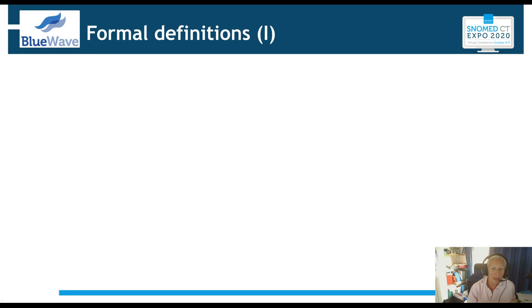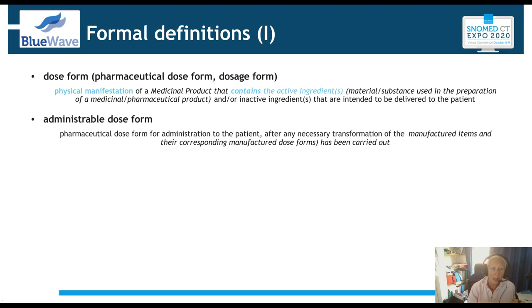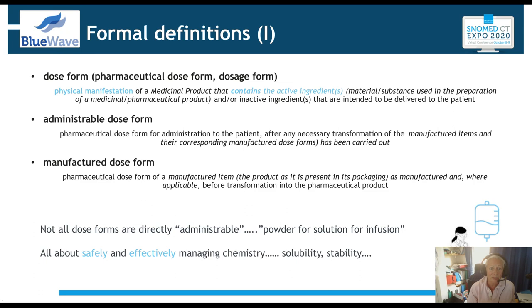We have various formal definitions of dose forms. Three matter to us particularly in clinical care. The pharmaceutical dose form is the physical manifestation of the medicinal product that contains the active substances — this is what we're most concerned about in SNOMED CT. But there are two subtypes: the administrable dose form and the manufactured dose form. Not all dose forms are directly administrable. A powder for solution for infusion must be made up before it can be given to the patient. The administrable dose form is the one given to the patient; the manufactured dose form is what we take off the shelf.